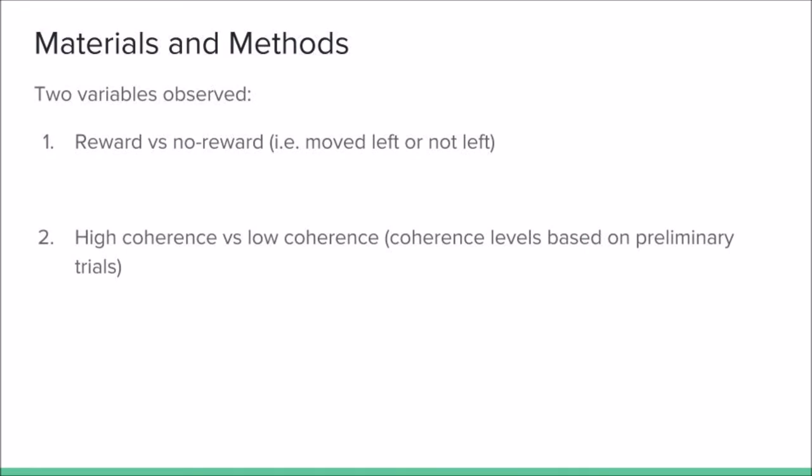Two main variables were tested. The first variable is whether the participants received a reward or not. The second deals with the coherence of the dots. Coherence deals with the direction that the congregation of dots move in.